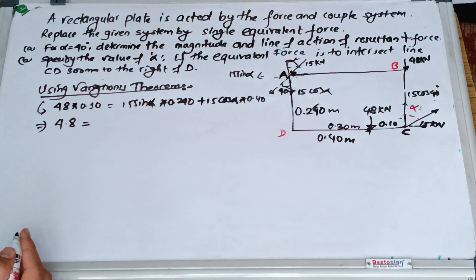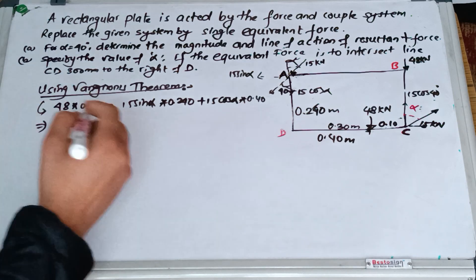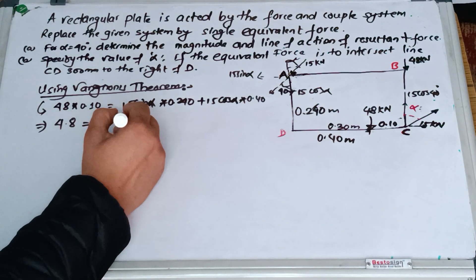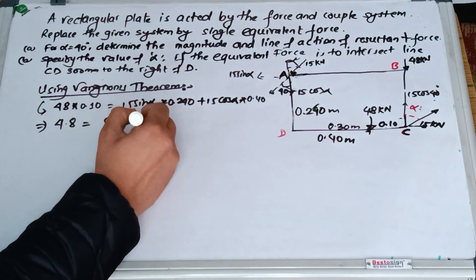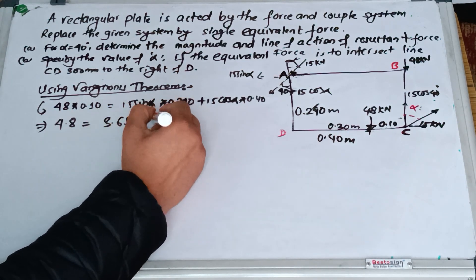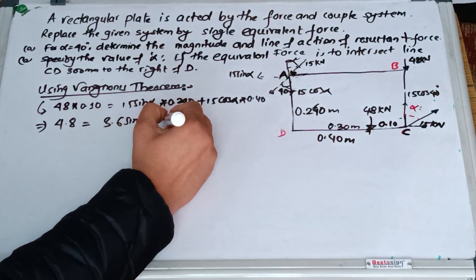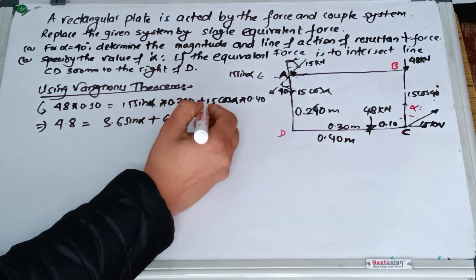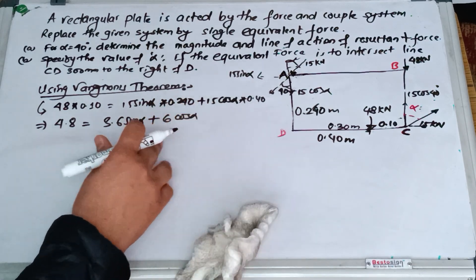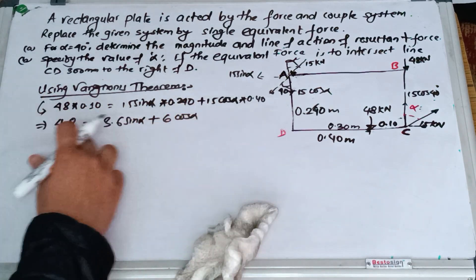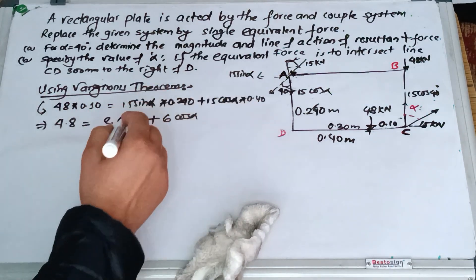This will be coming out to be 3.6 sin alpha plus 6 cos alpha. This is our equation. Now you have to determine the value of alpha.